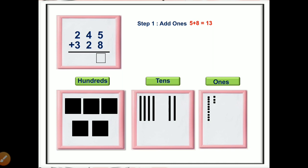So we will do regrouping — converting 13 into ones and tens. There are 13 small square blocks in the ones position, so we will make a bunch of 10 small square blocks. These 10 blocks combine together and make a stick, which goes to the tens position. Three small square blocks are left in the ones position, so 3 comes in the ones place and 1 is carry-forwarded to the tens place.